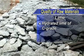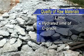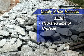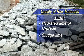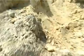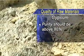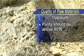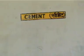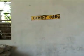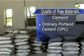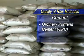Hydrated lime of C-grade is to be used. This should be free from extraneous materials and lumps to the extent possible. However, sludge lime of consistently good quality can also be used. Gypsum to be used should be free of lumps, and its purity should be above 80%. Alternatively, ordinary Portland cement (OPC) can also be used in place of lime and gypsum as a binding material.